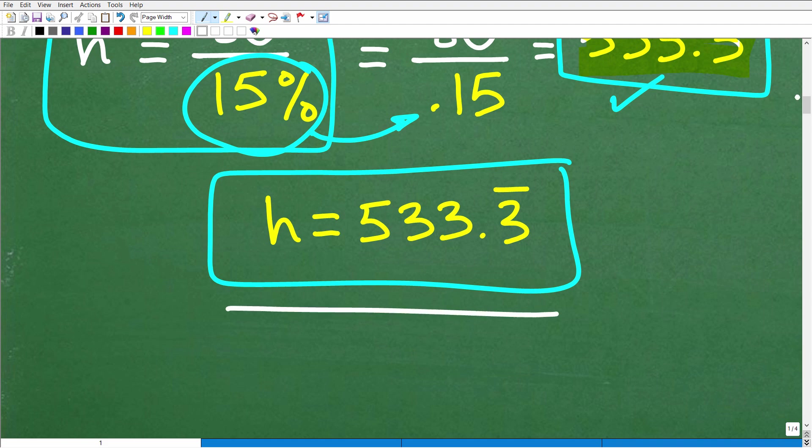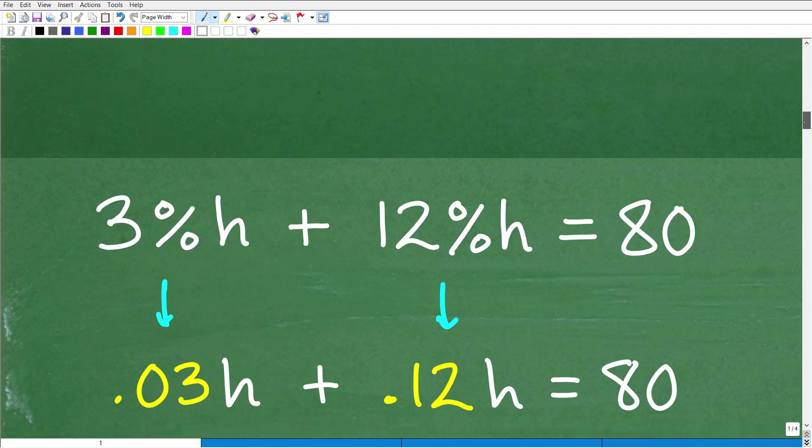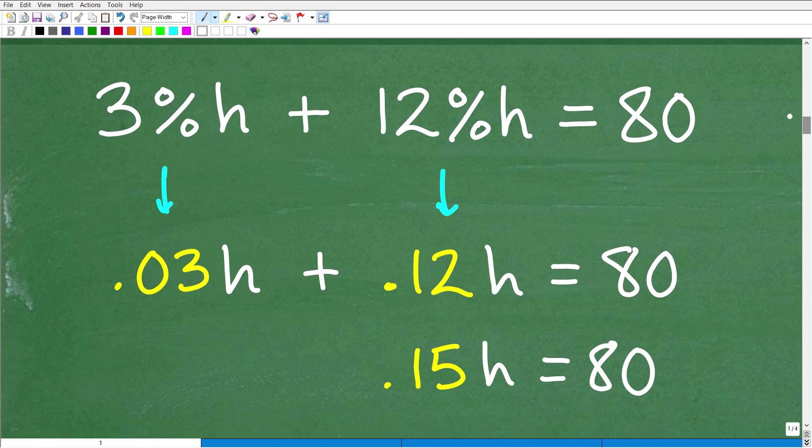Let's go ahead and take a look at another way to think about this problem. So stylistically, you could have said, alright, 3%. I'm going to go ahead and just write this as a decimal. So I could take this 3 divided by 100 or move the decimal point over two places to the left. I got 0.03h and 12%. I can write that as a decimal, divide it by 100 or move the decimal point over two places to the left. That's 0.12.